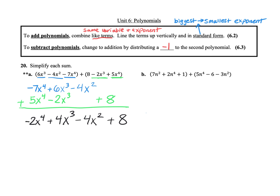Remember that when you add polynomials together, the exponents do not change when you combine like terms. So do not add like 4 and 4 and say x to the eighth. When we add or subtract, our variables are going to be the same — we're just adding and subtracting the coefficients, which are the numbers in front of the variables.